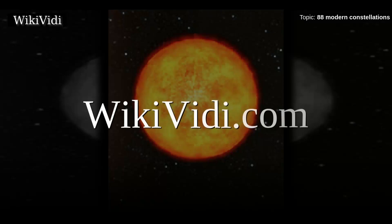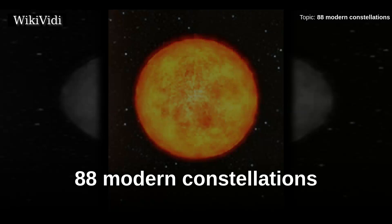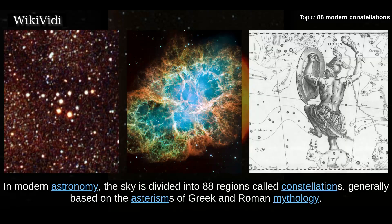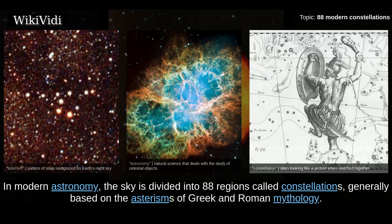A Wikivide Documentaries production. In modern astronomy, the sky is divided into 88 regions called constellations, generally based on the asterisms of Greek and Roman mythology.